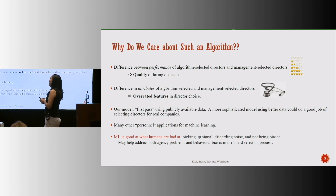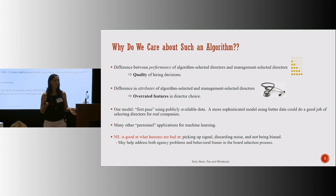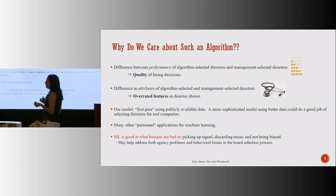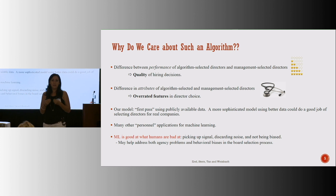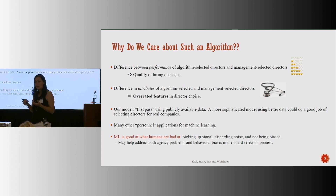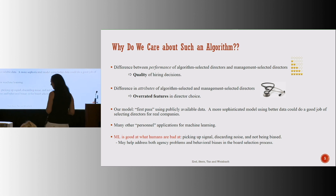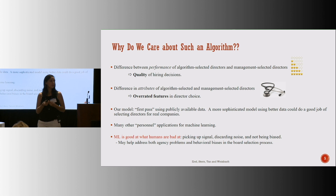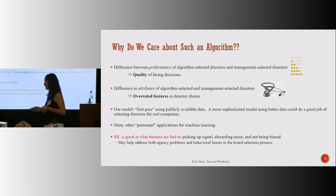One reason why we are particularly excited about bringing in these new machine learning tools in the governance space is that those tools are really good at what we're typically really bad at. They're complementary to human strengths — they're really good at picking up signal, discarding noise, all of that. And so we think that they can really help us with the agency conflicts that are present in the board nomination process.